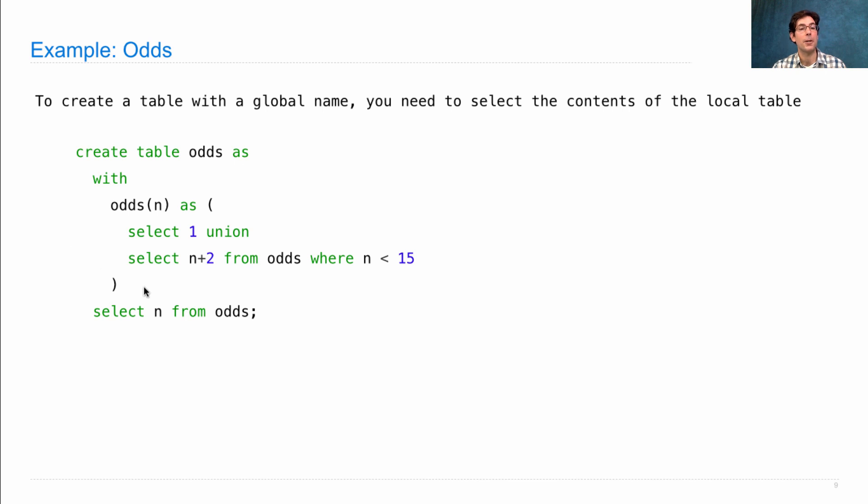Now what does this recursive select statement actually generate? It generates the following table where n starts at 1, then has 3, 5, 7, 9, 11, 13, and 15.